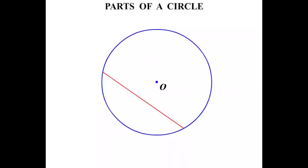A line like this from one end to the other but doesn't go through the center is known as a chord. And that area I've shaded there is known as a segment.